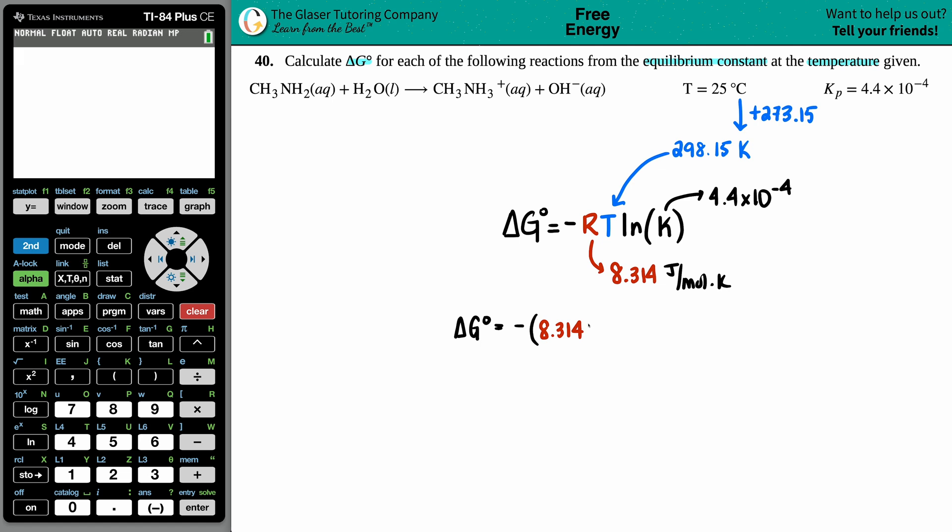Then I'm going to times by the temp, so that's 298.15, and then I'm going to do ln of the 4.4 times 10 to the negative 4th.